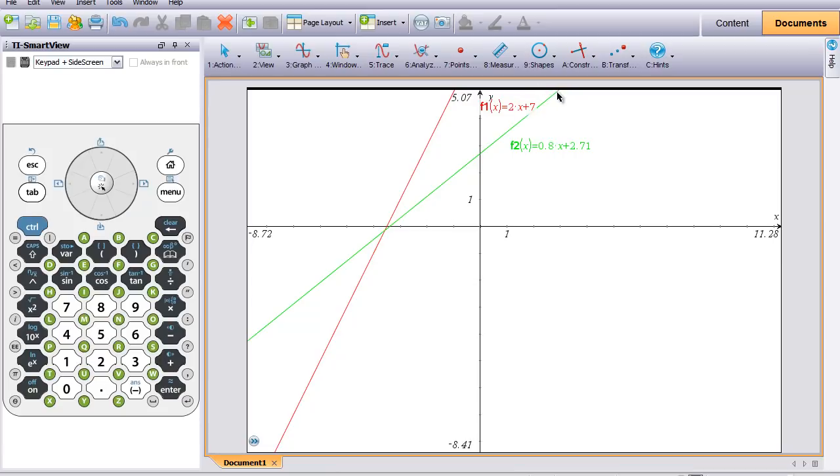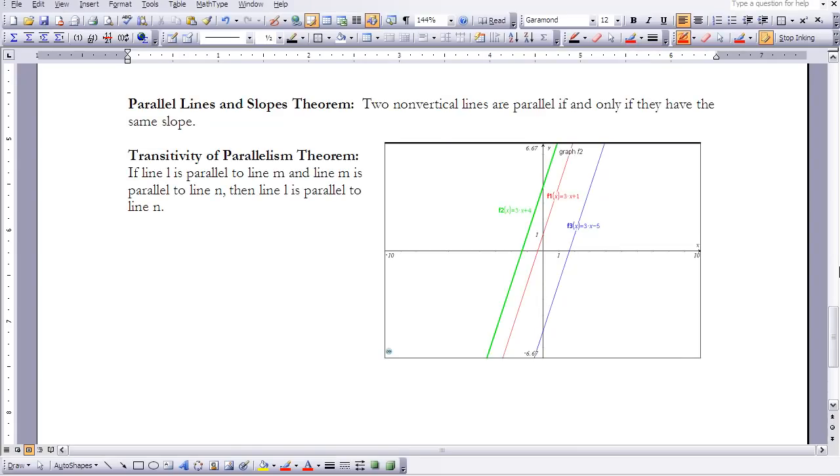So lines that are parallel have the same slope. So as you can see here, I have a theorem that says parallel lines and slopes. Theorem that says two non-vertical lines are parallel if and only if they have the same slope.